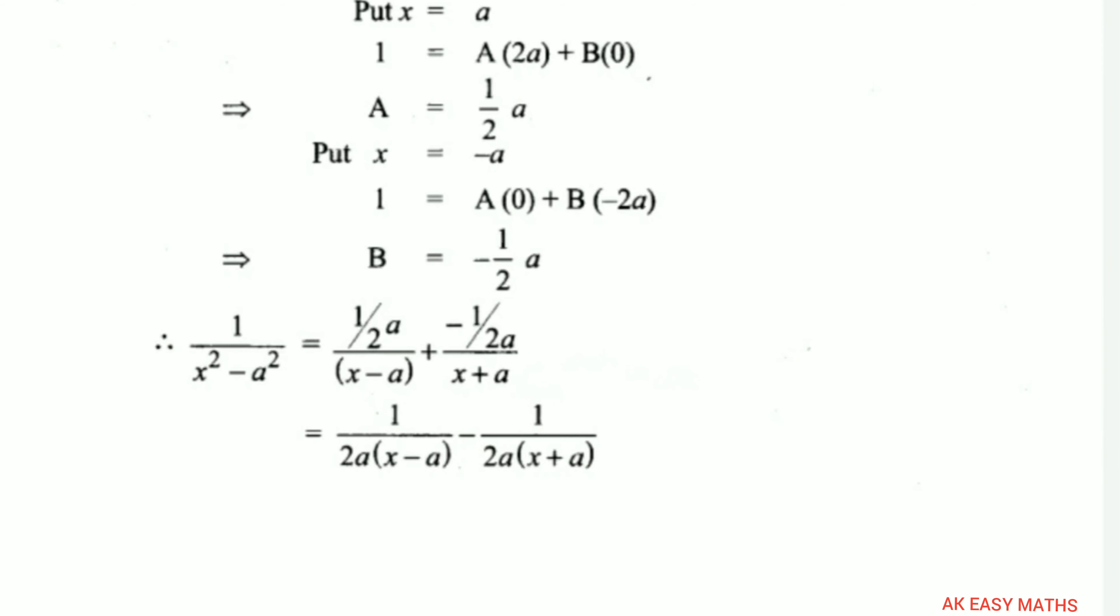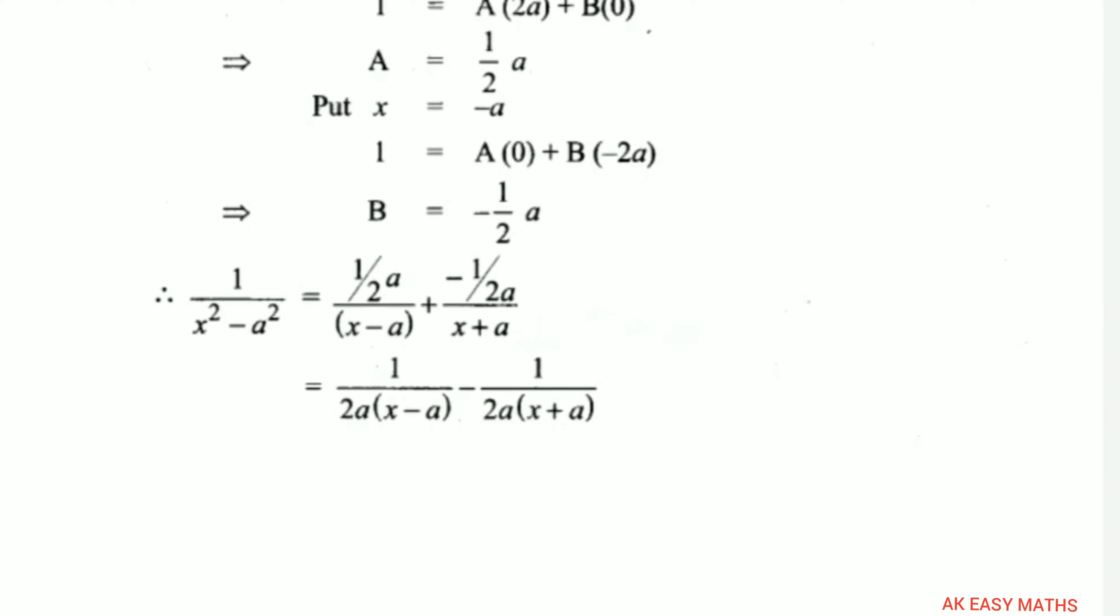So 1 divided by x square minus a square equals... substituting the a value and b value for simplification: 1 by 2a of (x minus a) minus 1 by 2a of (x plus a). After simplification, we can identify the denominator.